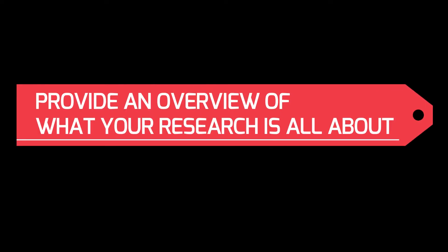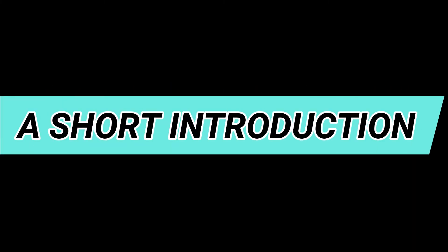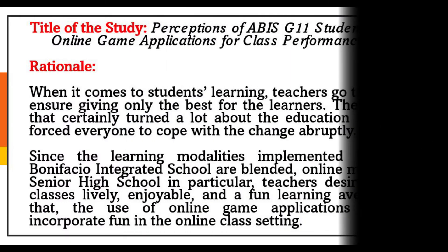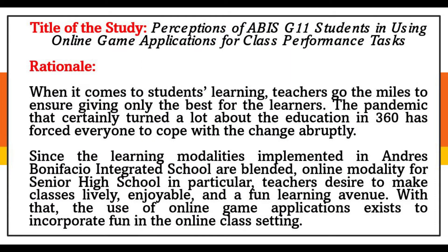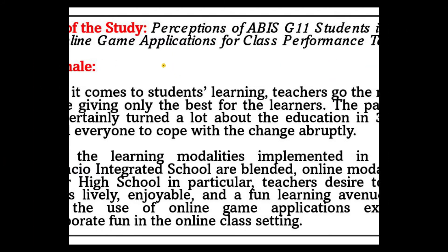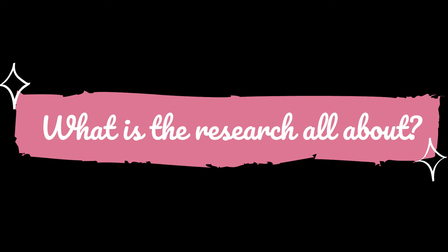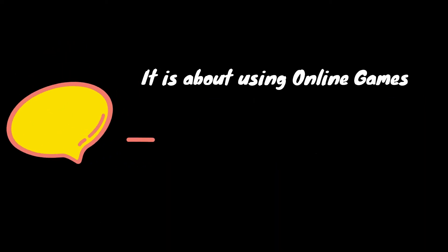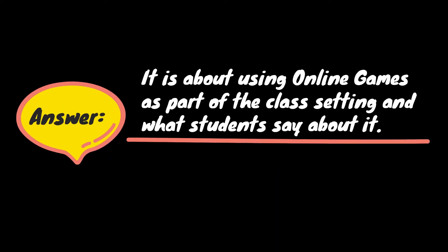The next part is the rationale. In this part of the research plan, you are expected to write a short overview of what your research study is all about — this is just a very concise introduction. Considering the provided research title, look at this example rationale. The example rationale answers the question: what is the research all about? It is all about using online games as part of a classroom setting and how students view them.